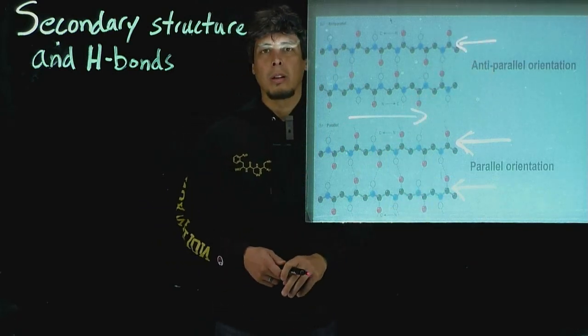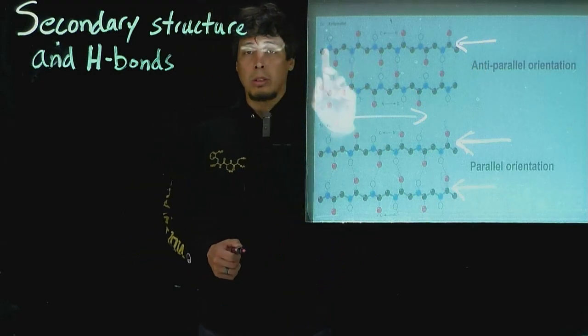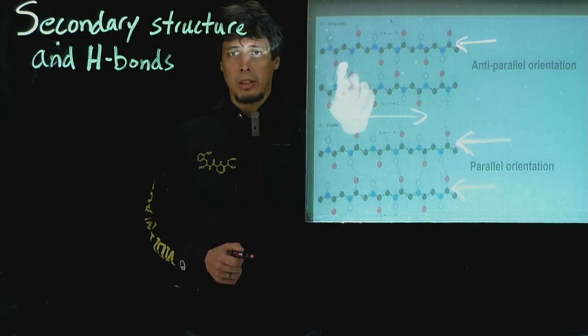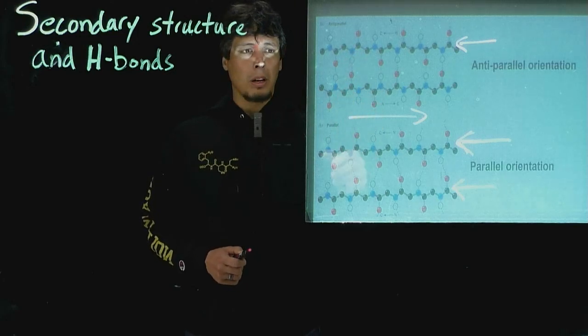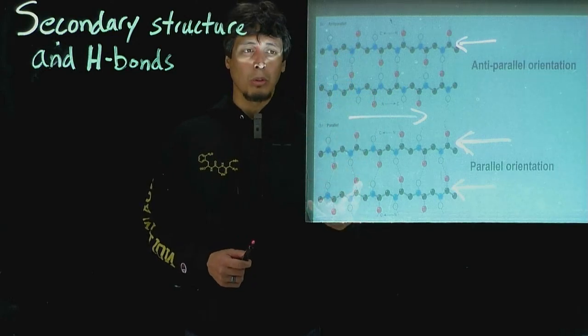So anti-parallel versus parallel. So note the similarity is that, just like in the alpha helix, the H-bond donor is the NH group in the peptide bond, and the H-bond acceptor is the CO or the carboxyl group in a different peptide bond.